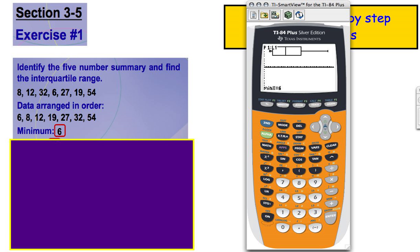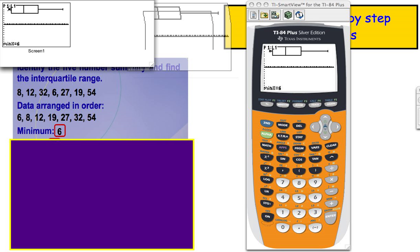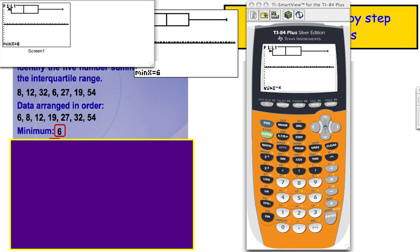So at this point, we can see that our minimum is 6. We can arrow over one more time, we can see that our quartile 1 is at 8.